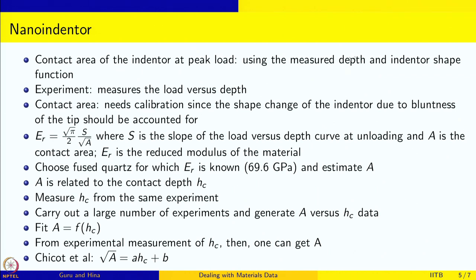The depth measurement is made and we know what the indenter is. But sometimes the experiment gives load versus depth, so we know the load and depth from there. From this we have to get some parameter that helps us get the contact area, since it is not directly measured. The contact depth–area relationship depends on the indenter shape. We know the shape, but the problem is the indenter gets blunted with use, or there are small changes in its shape, and they can actually affect the contact area. So we need to calibrate the contact area for a given measured depth and the particular load versus depth curve obtained.